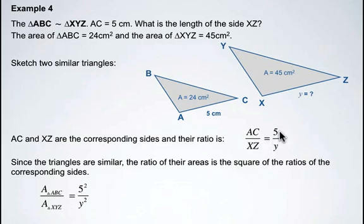We know that the ratio of the corresponding sides from above is 5 over y, so we need to square those values: 5 squared and y squared, which we can simplify to be 25 over y squared.